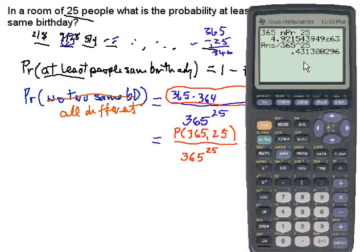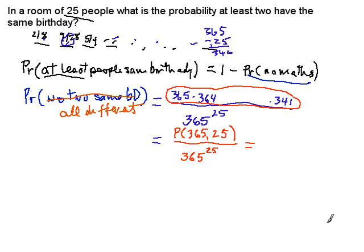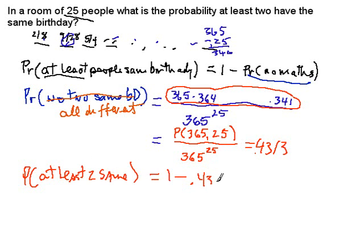Well, now that's 0.4313. So this was the probability that they were all different. What's the original question here? What's the probability of at least 2 the same?